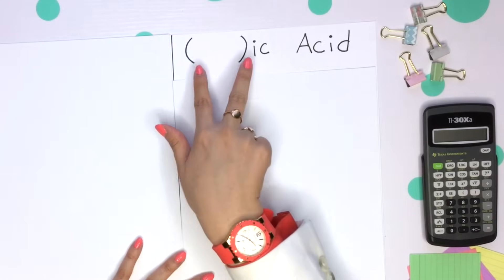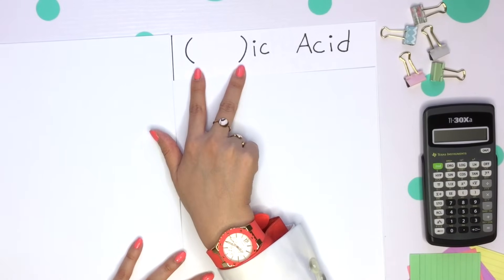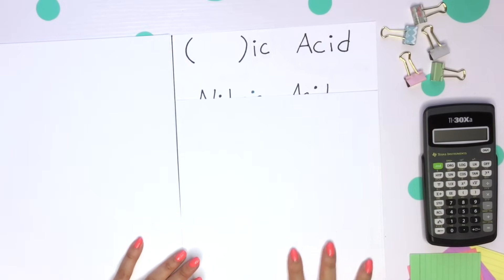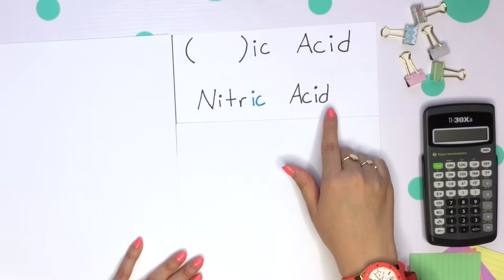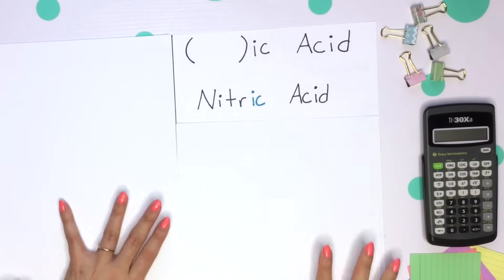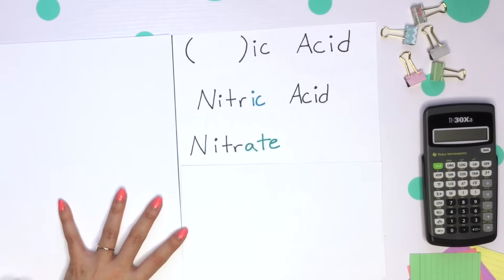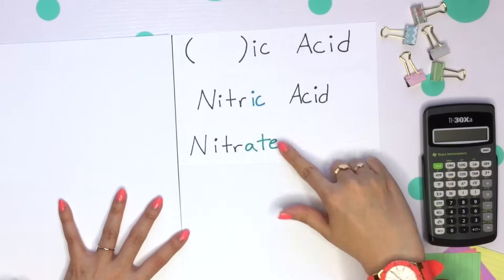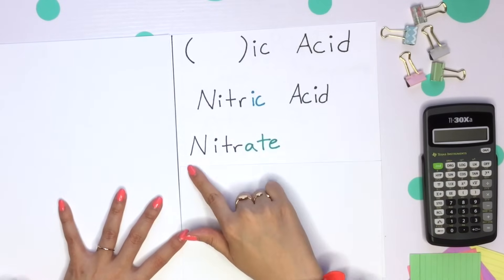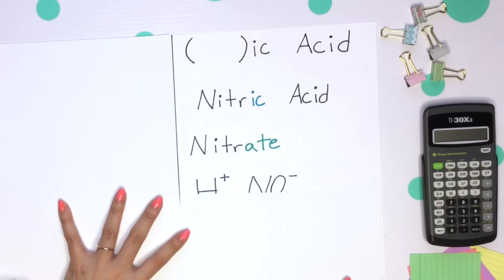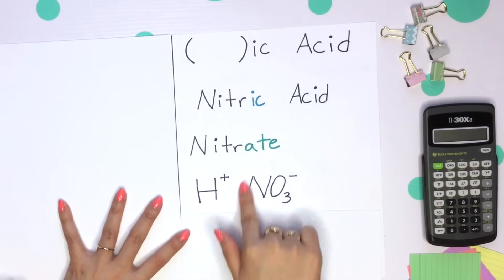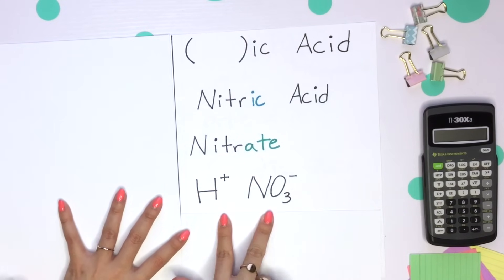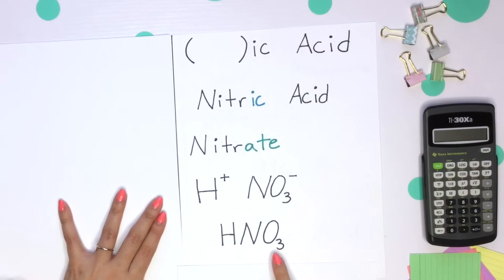The next setup goes right into the root name of your element ending in -ic acid. For example, nitric acid. The -ic acid goes with another polyatomic ending in -ate. So -ic acid goes with -ate. Nitric tells us there's a nitrate, and the acid once again states there's a hydrogen in front. We balance out our charges and get HNO3.